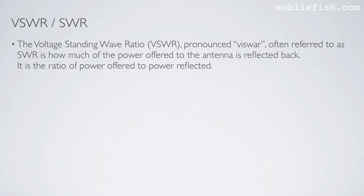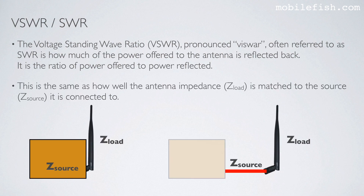The voltage standing wave ratio, pronounced VSWR, often referred to as SWR, is how much of the power offered to the antenna is reflected back. It is the ratio of power offered to power reflected. This is the same as how well the antenna impedance is matched to the source it is connected to.